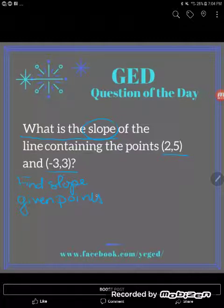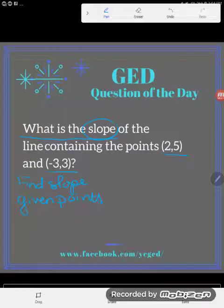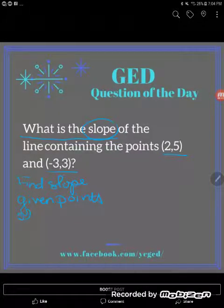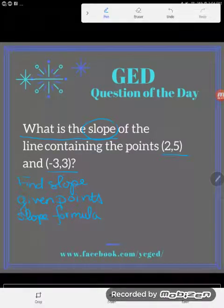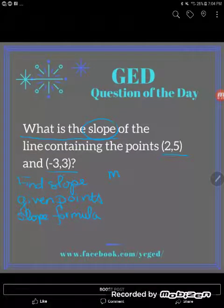Well, to find slope when you've been given points, the easiest thing to do is to bust out the formula, the slope formula. And I've got great news for you. It's on the GED formula sheet, so you don't even have to have it memorized. Go ahead and take a look at your GED formula sheet. The bottom third of the page shows you that slope formula. And what it says is this: M equals Y2 minus Y1 over X2 minus X1.